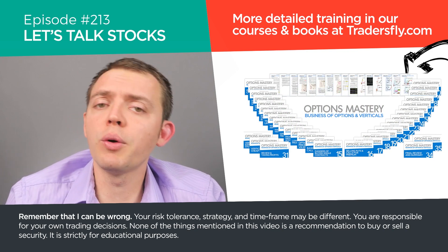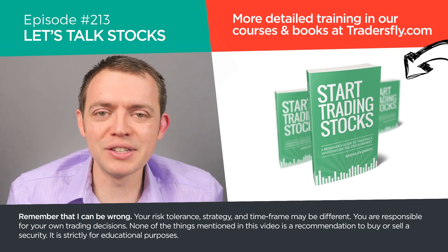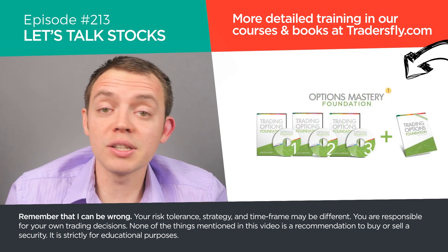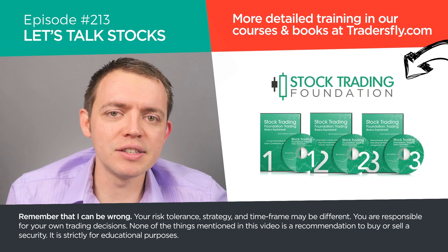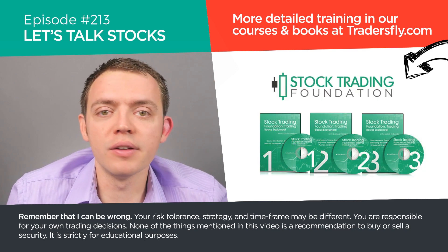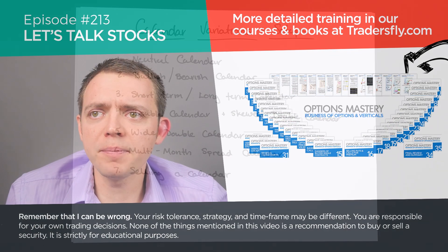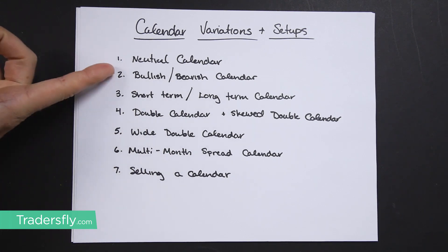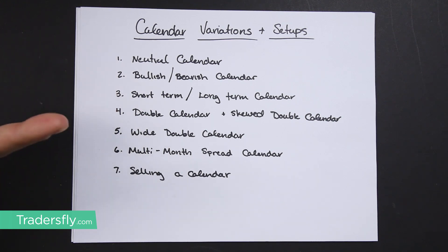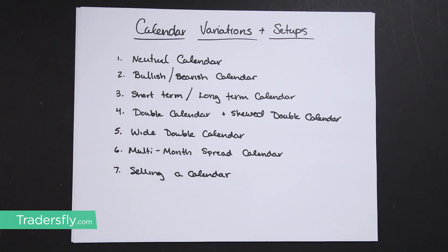I'll show you these variations fairly quickly. We don't have as much time or detail to get into every single one of these, and the different ways you can construct them, because there are variations on top of these variations, along with how you may adjust or tweak them if they go against you — we'll get more into that in the course. The variations we're covering are: neutral calendar, bullish and bearish calendar, short-term versus long-term, double calendar or skewed double calendar, wide double calendar, multi-month spread calendar, and selling a calendar.